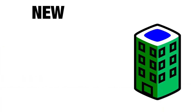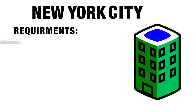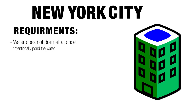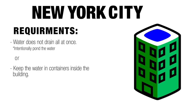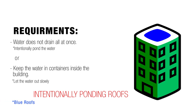In places like New York City, where the roof area accounts for a significant portion of the catchment area of a rain event, we now have requirements that water doesn't drain all at once from the roof. We intentionally pond the water on the roof, or keep the water in containers inside the building and let it out slowly into the stormwater system. We call these intentionally ponding roofs blue roofs, and this is what they look like.